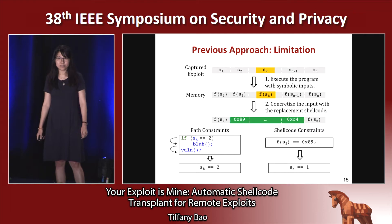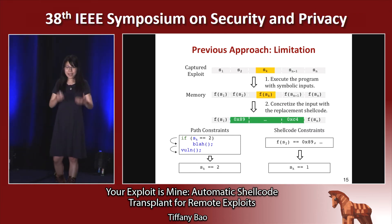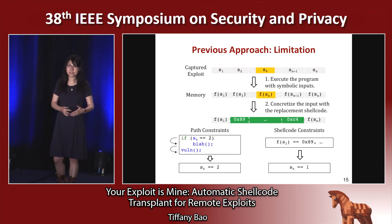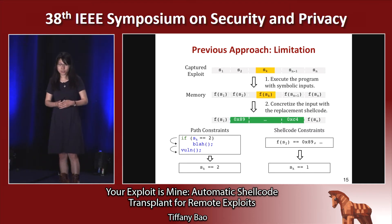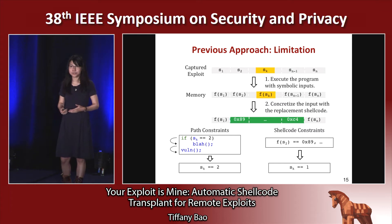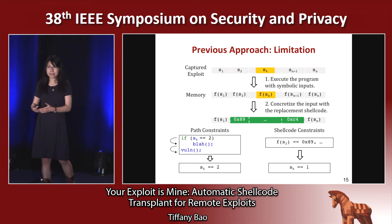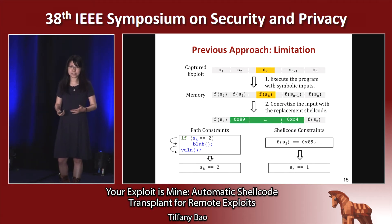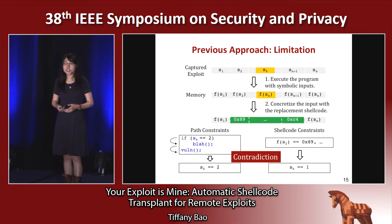Another possibility is that there is still a contradiction between the path constraints and the shellcode constraints, but the path constraints may not be necessary to trigger the vulnerability. For example, suppose we have this source code with "if sk equals two, it does blah, and then it calls a vulnerable function." In this case, we don't have to make sk equal to two. However, when we do symbolic execution, the symbolic trace goes into this if-statement and comes up with the constraint saying sk equals two. So the question is: how are we going to resolve those contradictions?